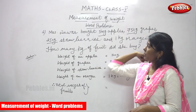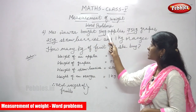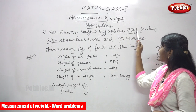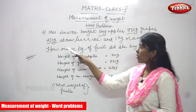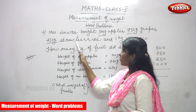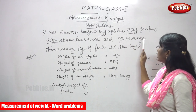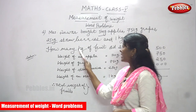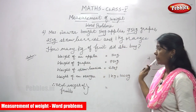Now the second problem: Mrs. Anwar bought 500 grams of apples, 750 grams of grapes, 250 grams of strawberries, and 1 kilogram of oranges. So how many kilograms of fruit did she buy?